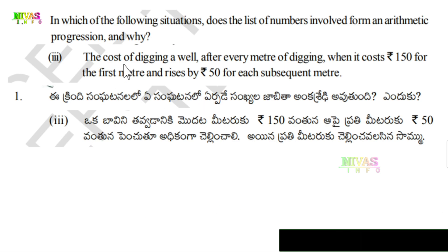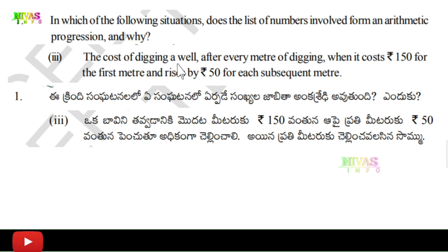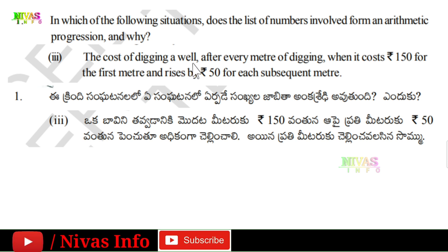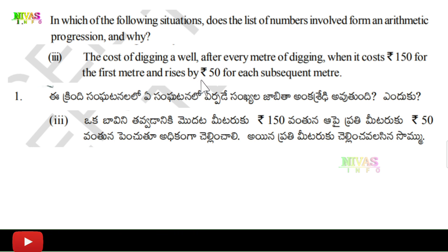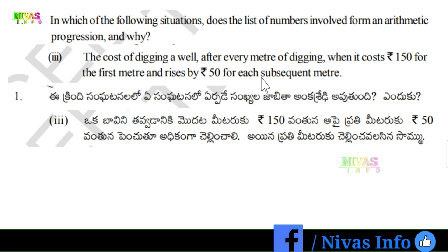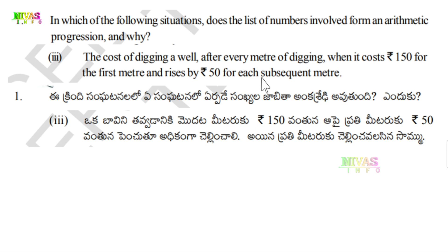Next question: The cost of digging a well after every meter of digging, when it costs 150 rupees for the first meter and rises by 50 rupees for each subsequent meter. So the second meter adds 50, the third meter adds 50, and so on.